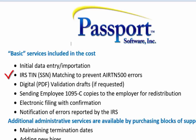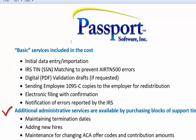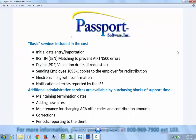It also includes IRS TIN matching to prevent errors where the employee's name and social security number do not match the IRS database. It also includes digital PDF validation drafts, sending employee 1095-C copies to the employer for redistribution, electronic filing of the 1095-C and 1094-C with confirmation, and notification of errors if reported by the IRS. For many users, that's all they'll need.